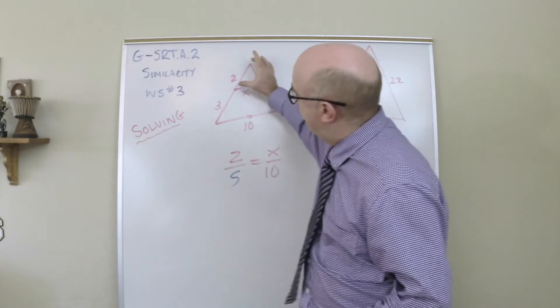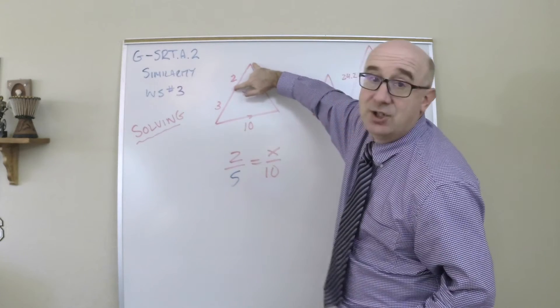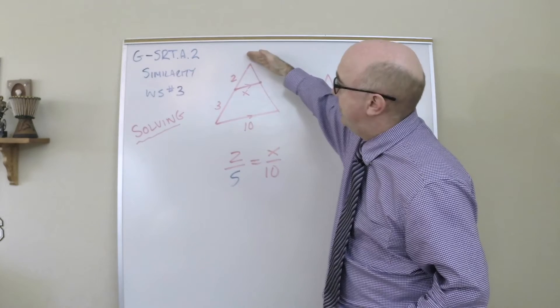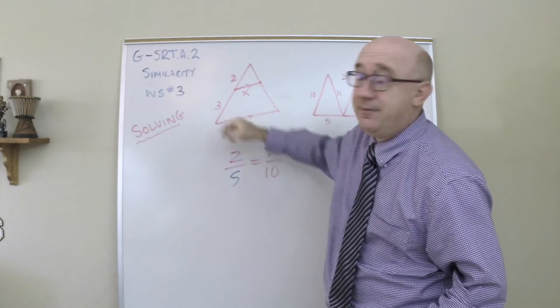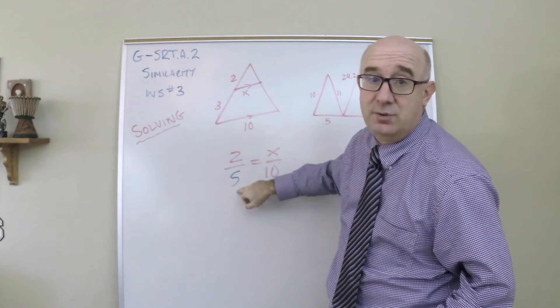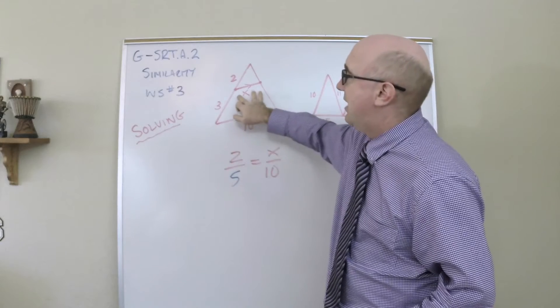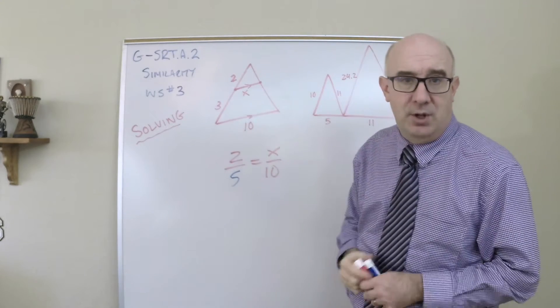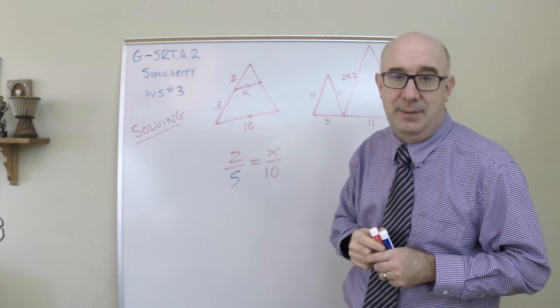And that's kind of what we're doing here. We're saying the entire side two is to the entire side five, it's the sum of those two items, as the entire side x is to ten. We cross multiply and then we get the same answer.